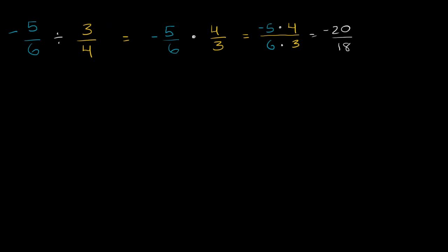I'll give myself a little more space. So if we divide both the numerator and the denominator by 2, just to simplify this. And I picked 2 because that's the largest number that goes into both of these. That's the greatest common divisor of 20 and 18. 20 divided by 2 is 10. And 18 divided by 2 is 9.